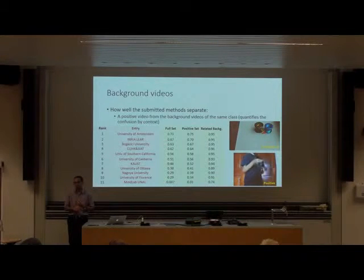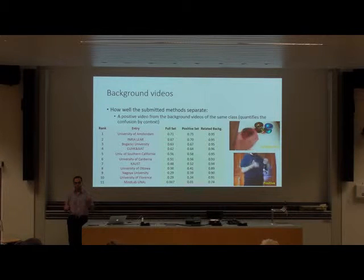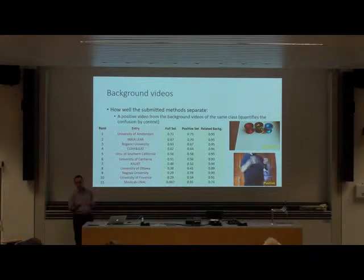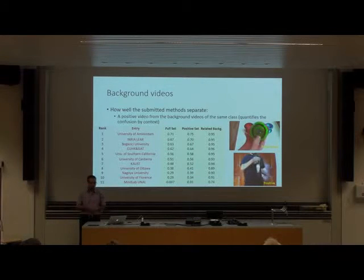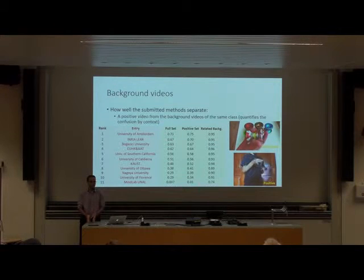We didn't have any method using objects directly or any kind of high-level semantic concept. If we had a method that took into account the presence of a Yo-Yo as a cue for the action of playing Yo-Yo, it would likely be confused by background videos and achieve a lower average precision. But we know that in the future, a comprehensive action recognition system should use semantic information. When those kinds of methods come around, this sub-evaluation will tell us how much the semantic information is being leveraged.